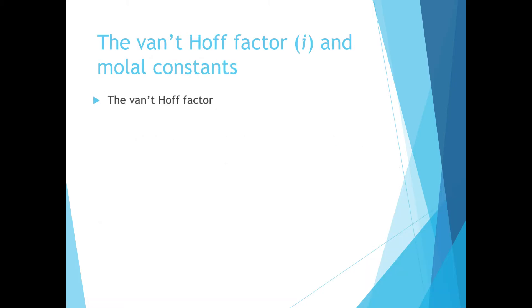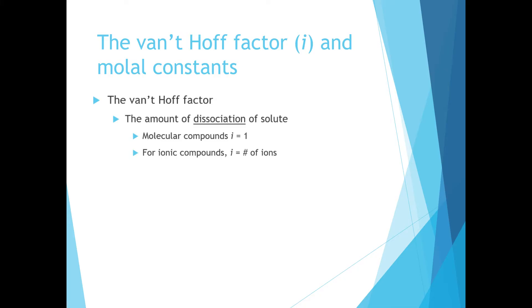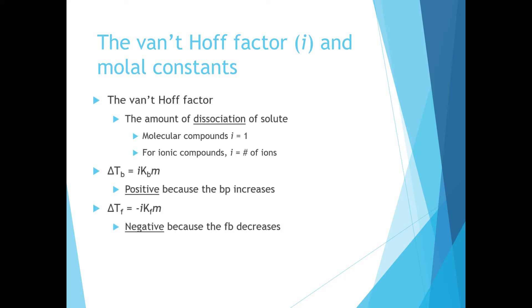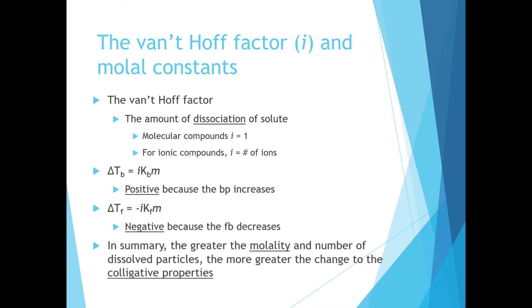So what is the van't Hoff factor? It is the number of particles produced when a solute dissolves in water — the amount of dissociation of the solute. For a molecular compound, the van't Hoff factor equals one because every covalent compound that dissolves in water produces just one particle — no dissociation occurs. For an ionic compound that's a strong electrolyte, the van't Hoff factor equals the number of ions produced per formula unit. Delta Tb is always positive because the boiling point increases, while delta Tf is always negative as the freezing point of our solution is lower than that of the pure solvent. In summary, greater molality and greater number of dissolved particles lead to greater changes in the colligative properties of boiling point and freezing point.